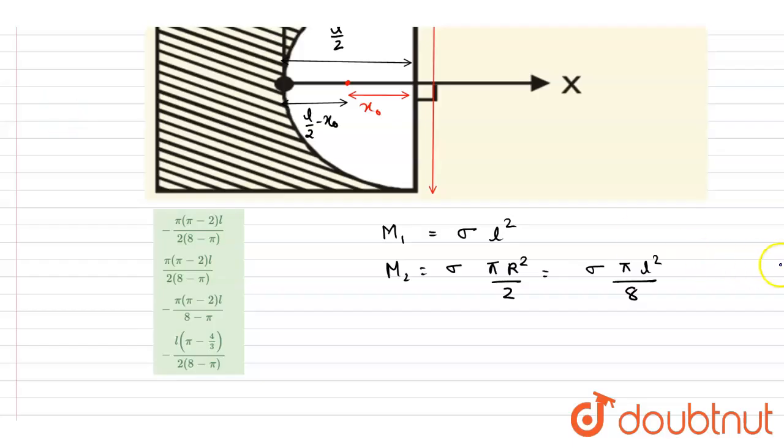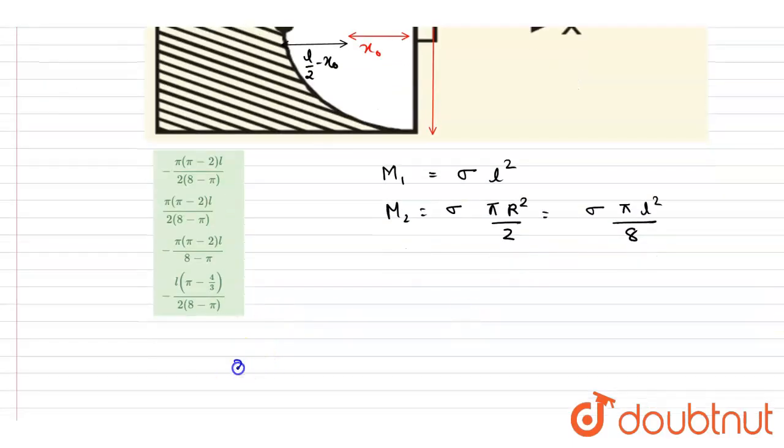Now I will write down the x-coordinate of the center of mass. It is equals to m₁x₁ minus m₂x₂, since it is removed.